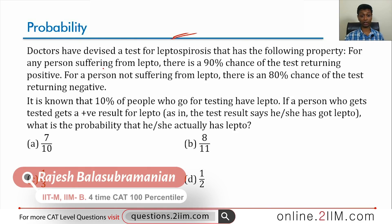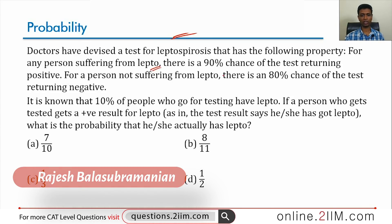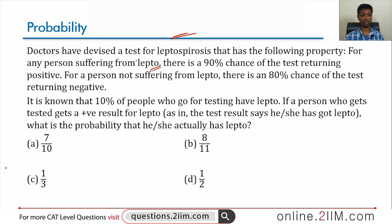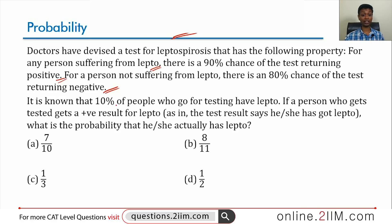Doctors have devised a test for leptospirosis with the following properties: for any person suffering from lepto, there is a 90% chance of the test returning positive. For a person not suffering from lepto, there is an 80% chance of the test turning negative. It is known that 10% of people who go for testing have lepto.